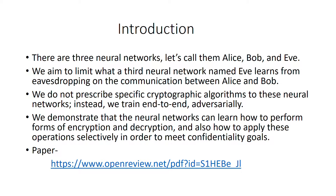We haven't specified any cryptographic algorithms to these neural networks — we are just training them adversarially. This means that Bob and Eve are going to compete with each other so that Alice and Bob are able to communicate securely. Even though Eve is able to listen to their information, Eve is not able to figure out what's going on. At the end of the presentation you'll understand that even though we didn't specify any forms of encryption or cryptography, these networks were able to securely transfer data. Here's the link to the paper if you want to read it — it's complex but very interesting.